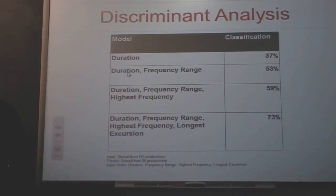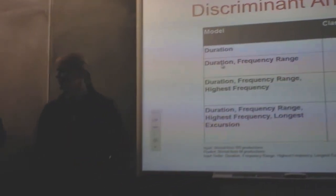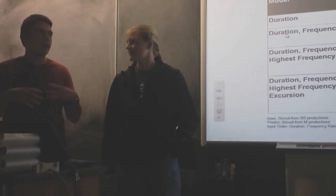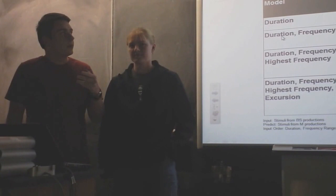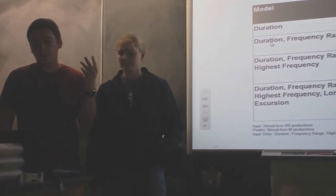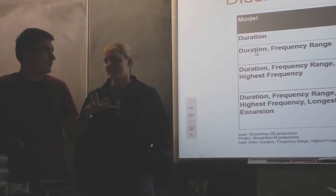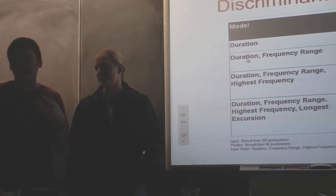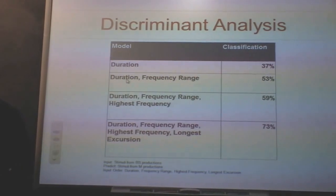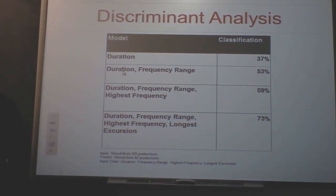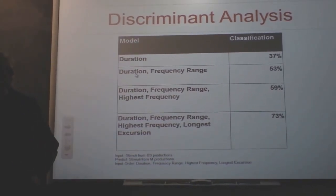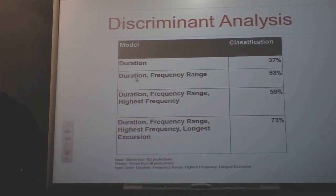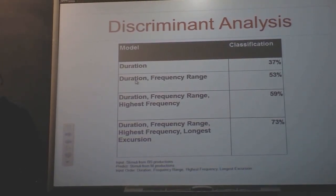The discriminant analysis was a way that we tested if the factors in my recordings also showed up in Monica's recordings. Basically the computer takes the first variable and compares it — it uses one set of recordings to try to predict the emotion of the second recordings. In this first example, using Ben's recordings, only 38 percent of Monica's recordings were able to be classified the same way.